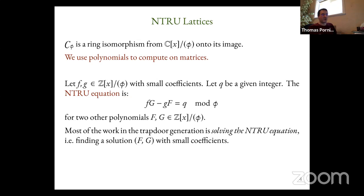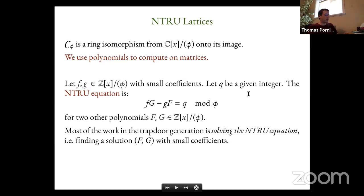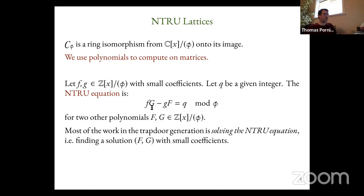The NTRU equation is about: given two small polynomials f and g modulo phi with integer coefficients, find two other polynomials — big F and big G — also with integer coefficients modulo phi, that fulfill the equation f·G − g·F = q for some given integer q. Q is usually small — in Falcon it's a prime integer. We have to notice here: it's multiplication with integers as coefficients, not modular integers. They are conceptually unbounded, and most of our troubles are because they can become quite large.